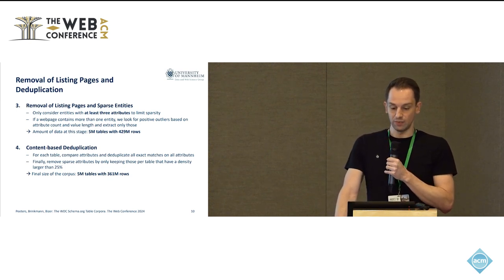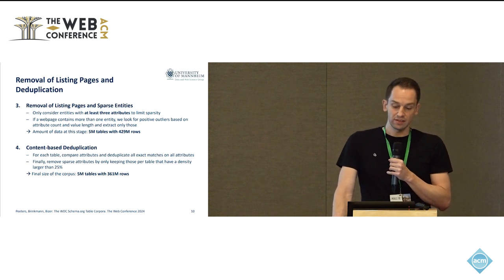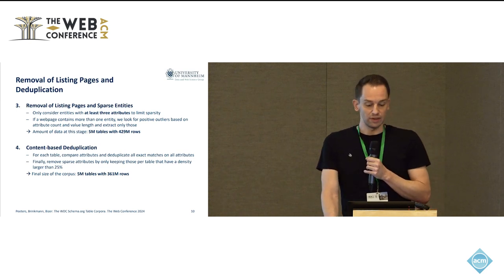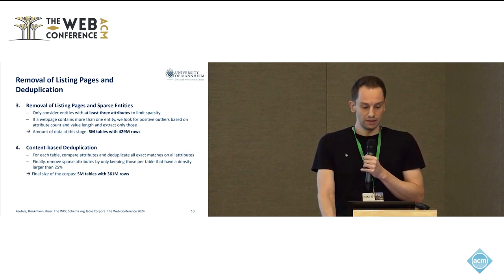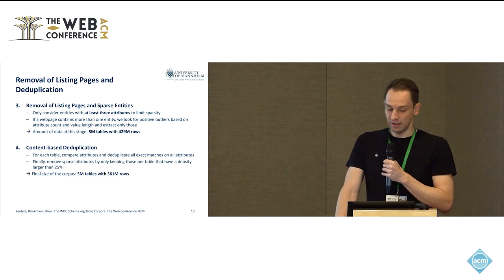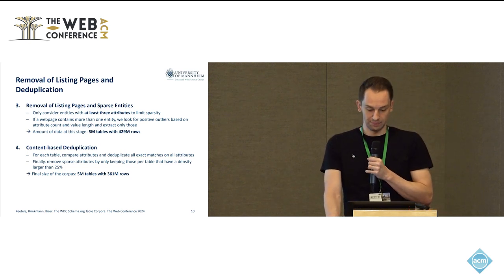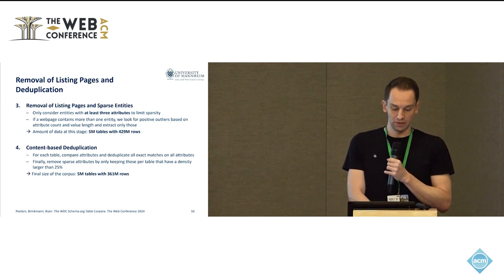In the final step we do a simple content-based deduplication on exact matching across all attributes, and we also remove those columns per table that have a density of less than 25 percent. This then leads us to the final size of our 2023 corpus, which is 5 million tables with 361 million rows.